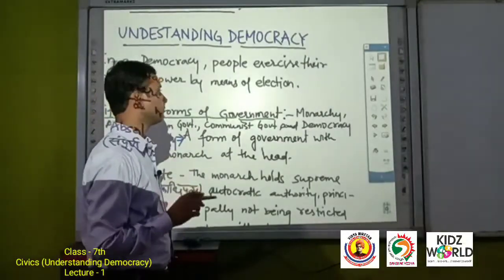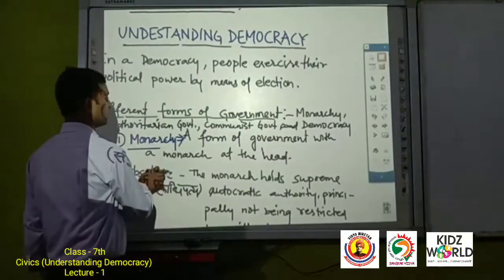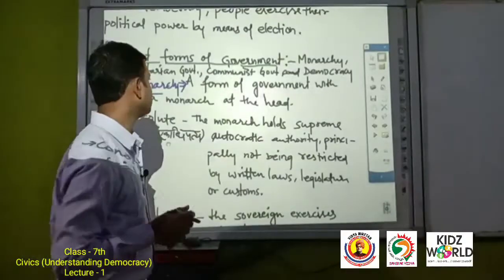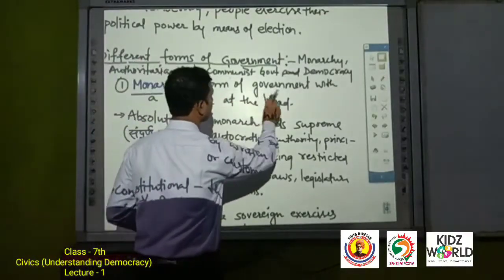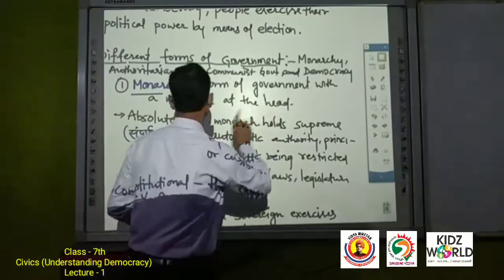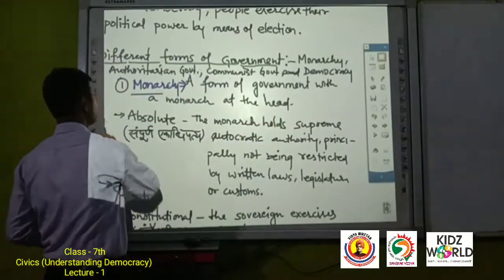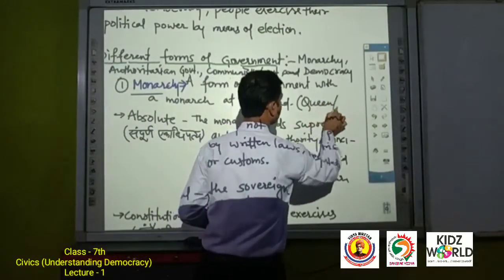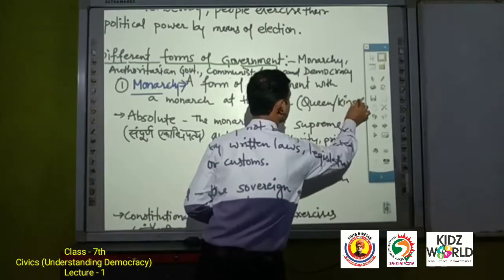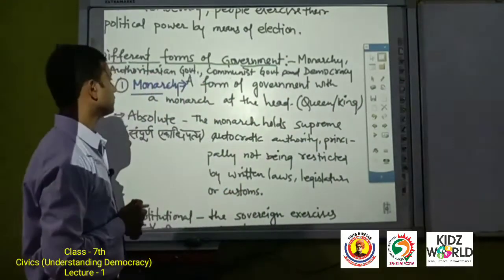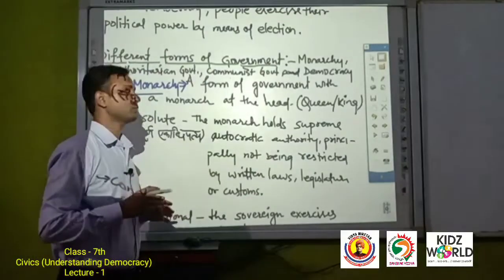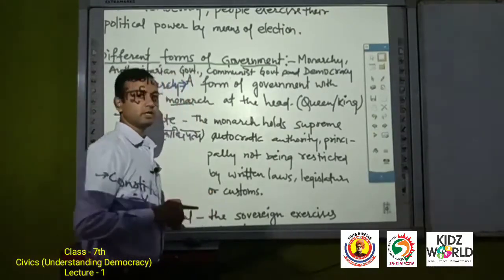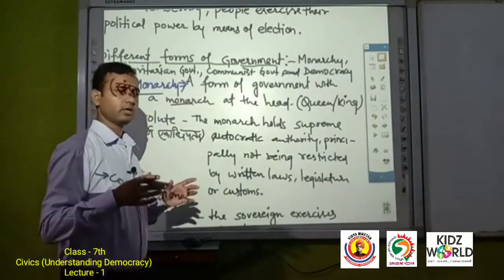Today we have the first form — Monarchy. Monarchy is actually a form of government with a monarch at the head. Monarchy means Queen and King — the ruler is the head of the state.